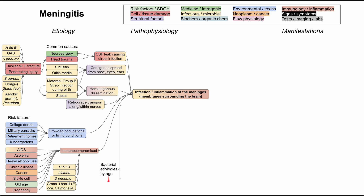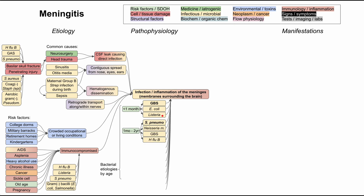One more way to break down the etiologies of meningitis is by age. If you're under one month old — a neonate — you're most likely to get group B strep meningitis, through the same pathophysiology where group B strep colonizes the vaginal canal, the baby is born and develops an eye or ear infection or sepsis. E. coli or Listeria can also occur in neonates. In toddlers one month to two years old, the most likely bug is Strep pneumo, with Neisseria meningitidis, group B strep, and Haemophilus influenzae type B also common.